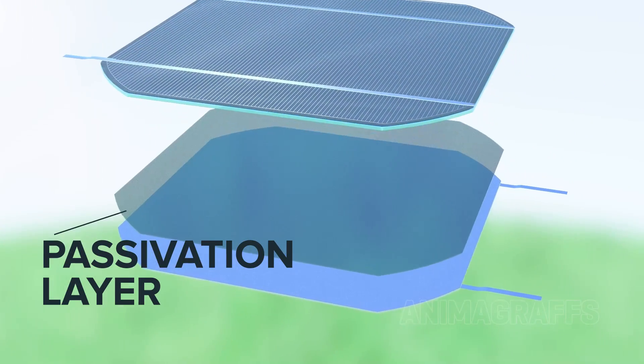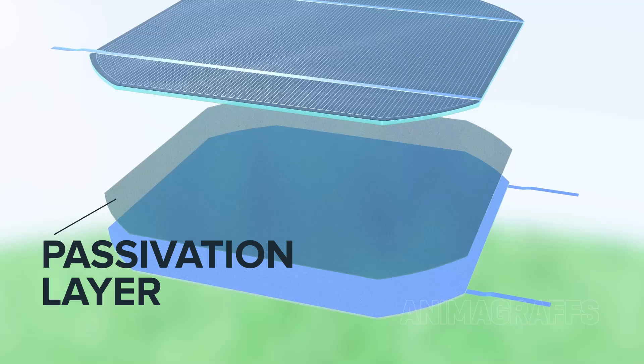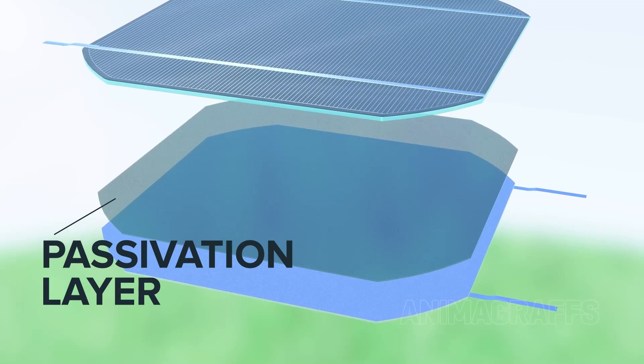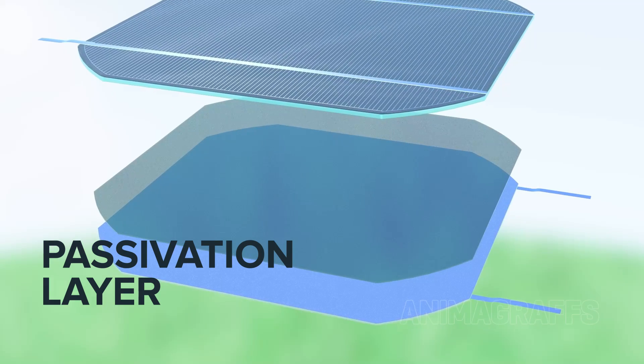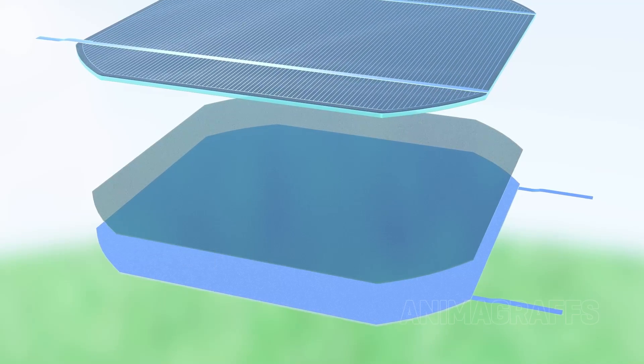Passivation layer. A special coating over the rear surface helps prevent early recombination of electrons and holes and gives light another chance to bounce through the cell and be absorbed.